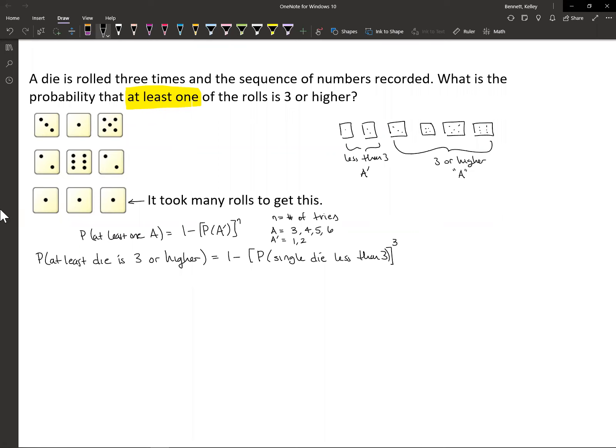The probability that at least one die is three or higher—on the left-hand side, this big long expression, that's what we want to compute. We're going to use the right-hand side of the equation to actually compute it.